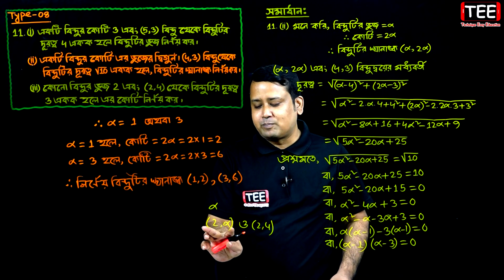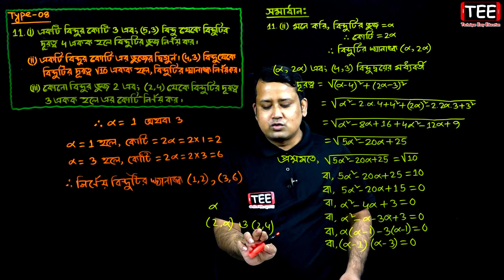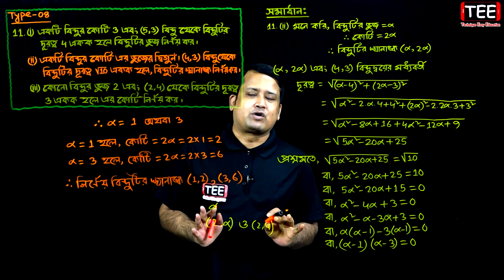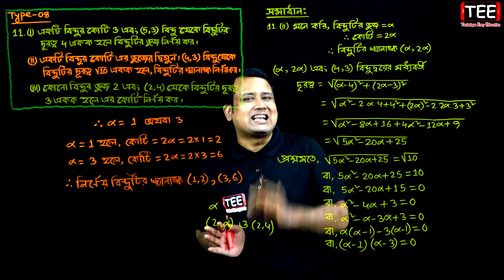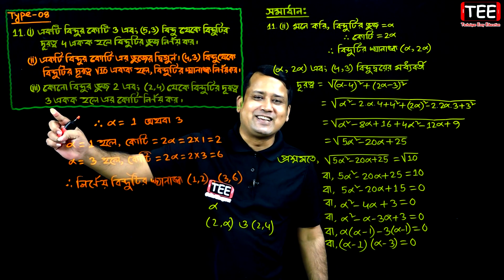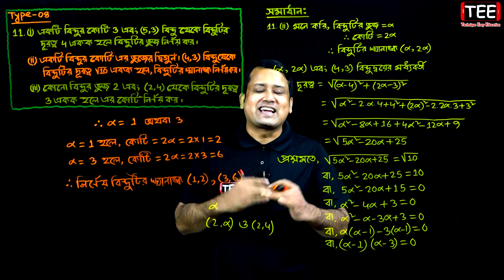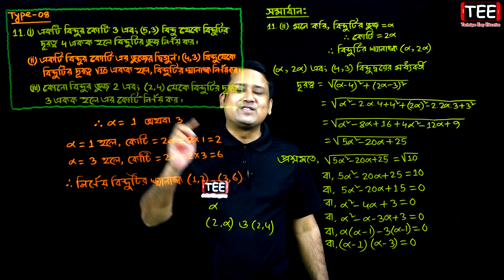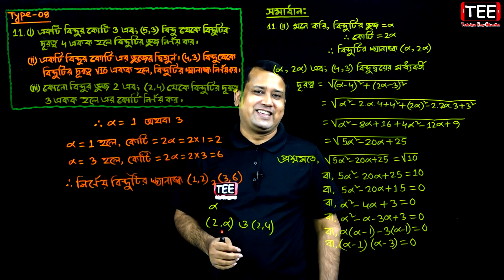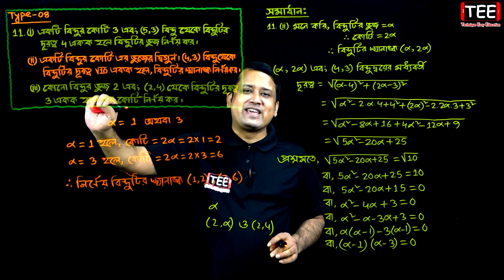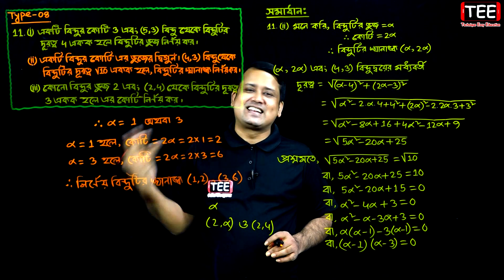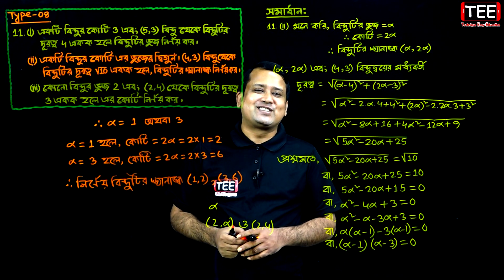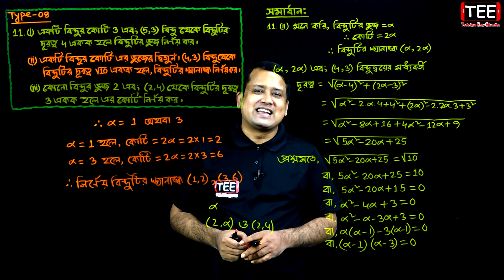Then two alpha and two, four. This is the second one. So write three. Write the calculation. We will know alpha. So what is the second one? Now I will ask you to do this.